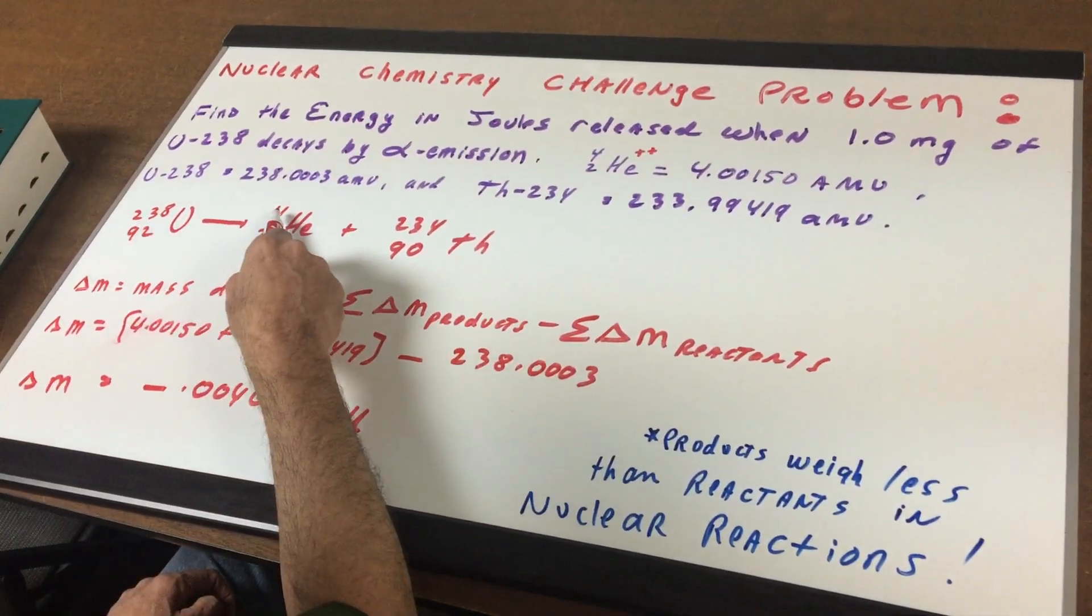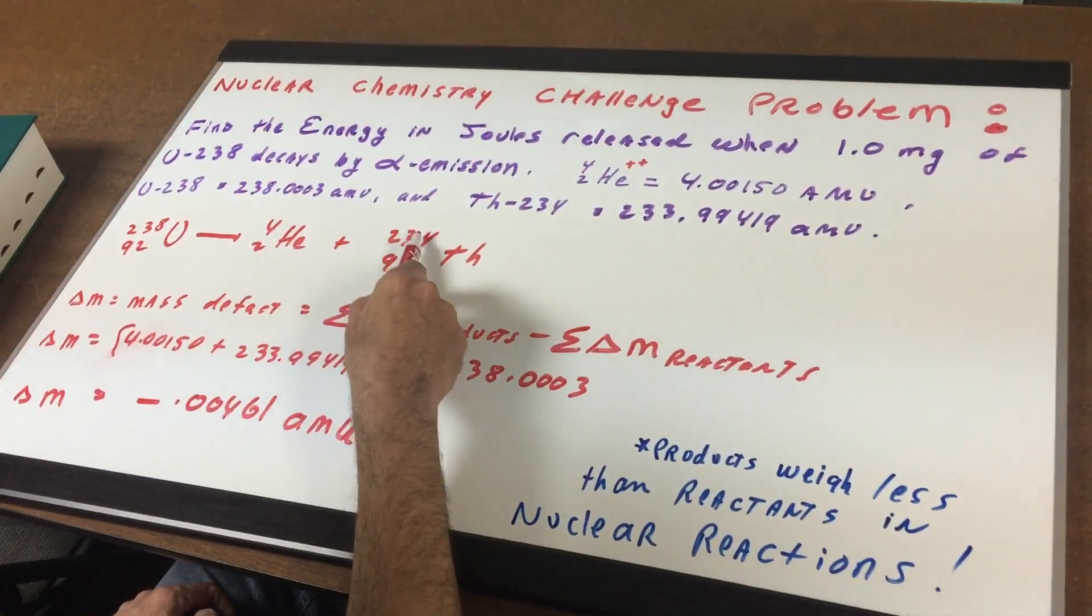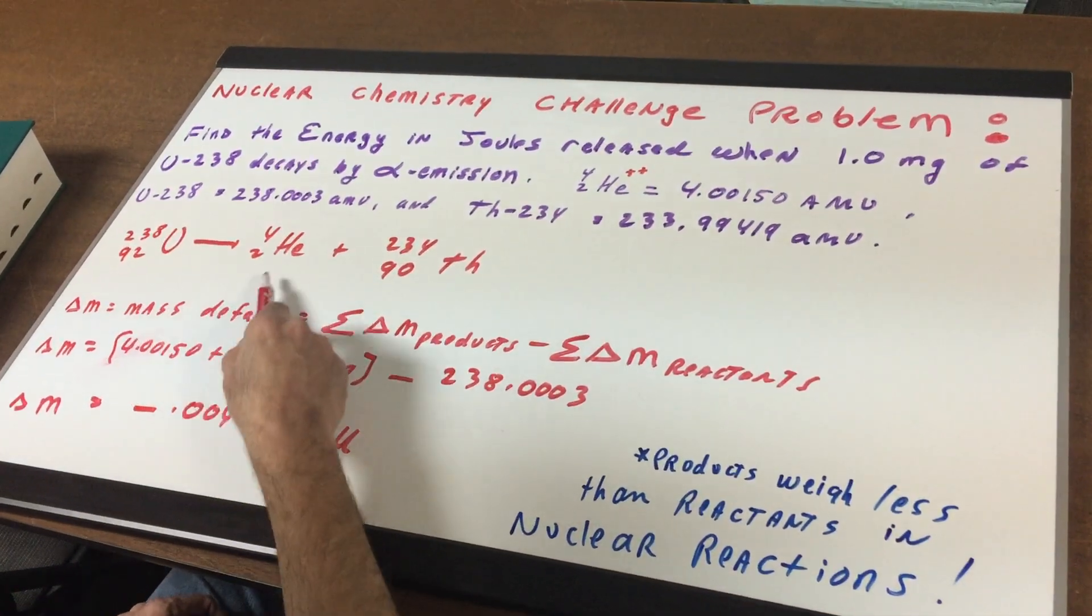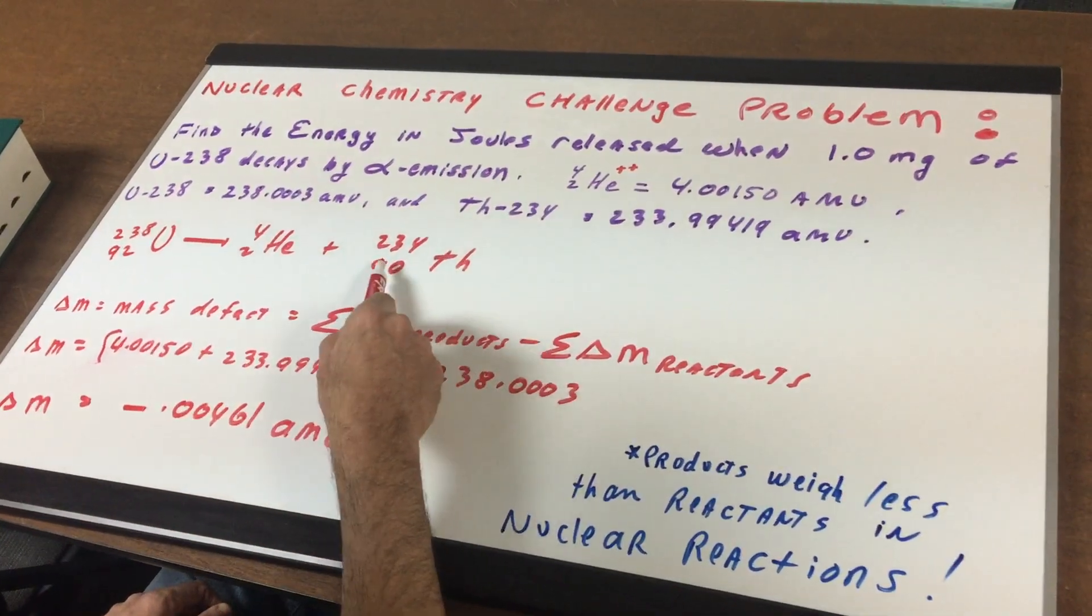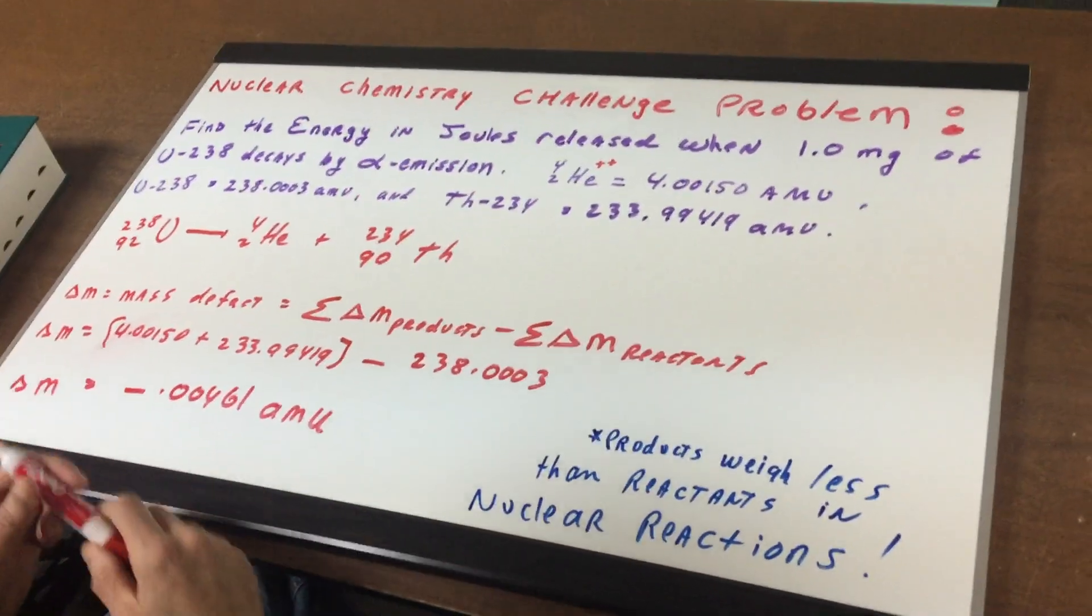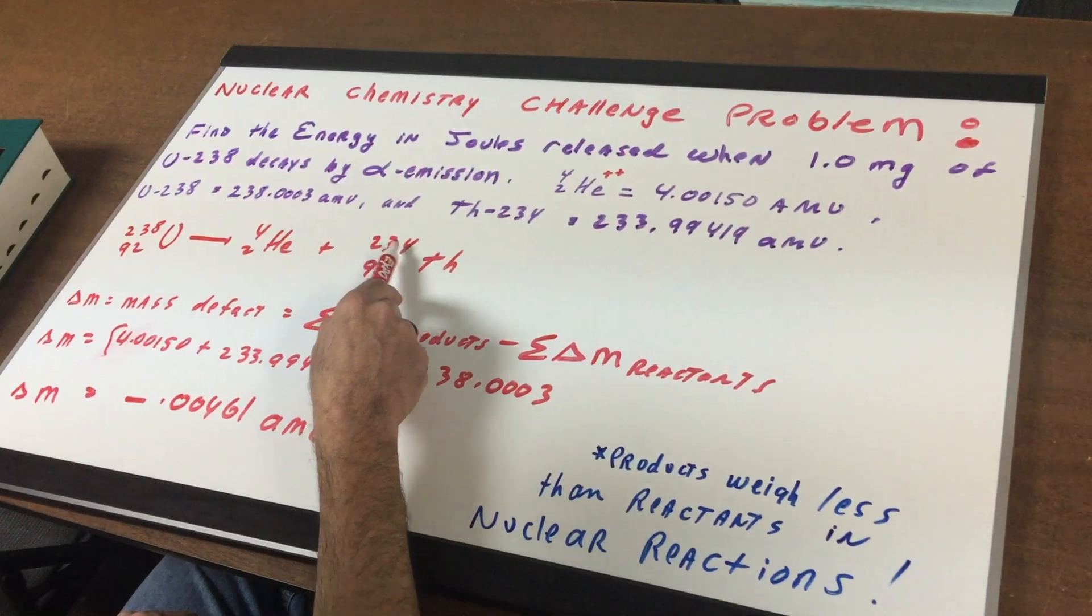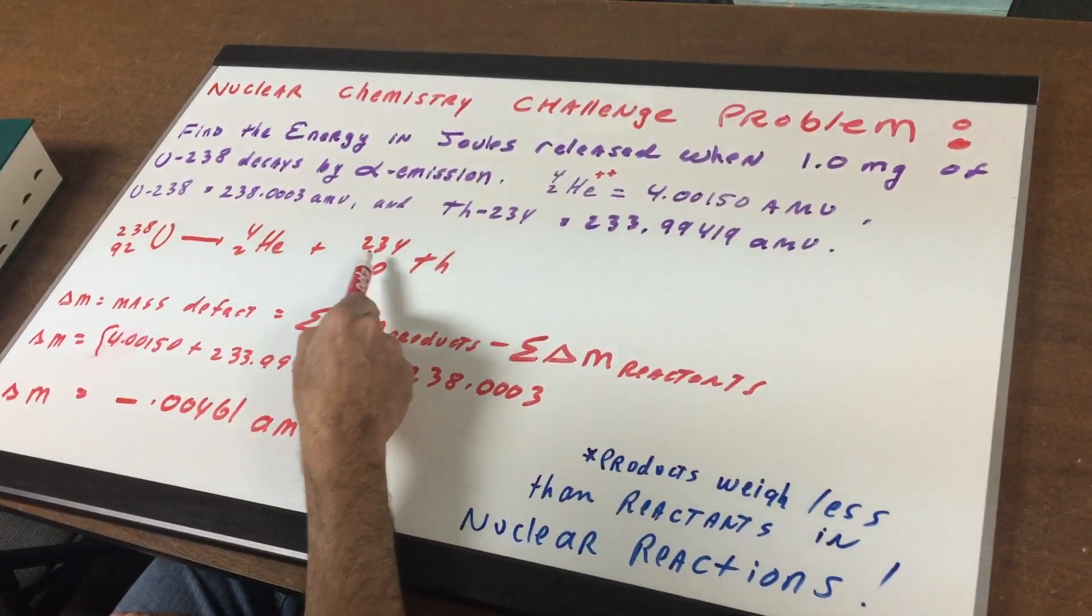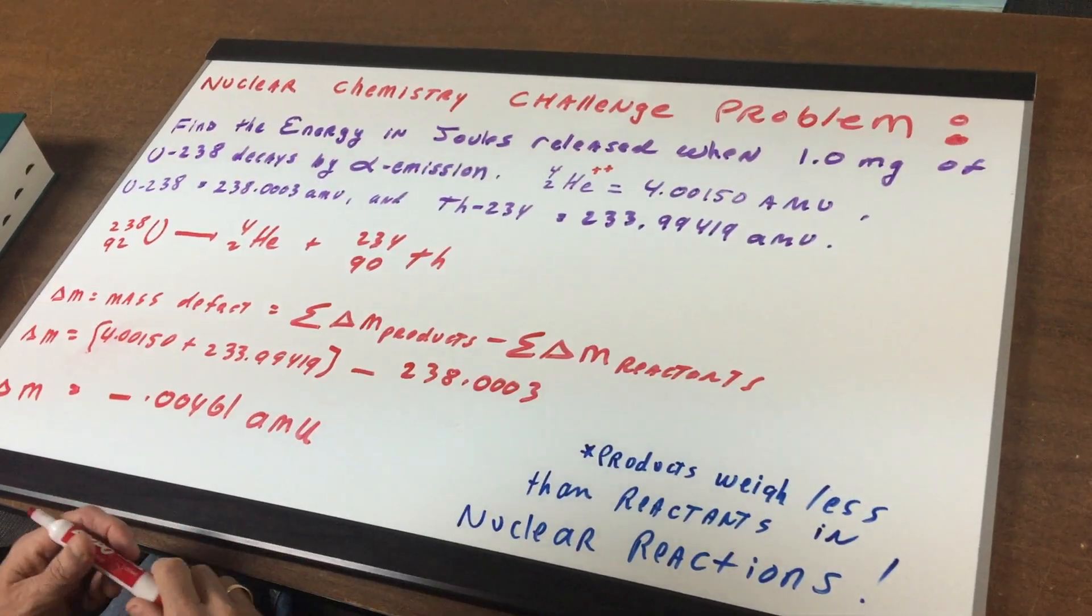So notice the upper left is 238. Here you got a 4. So you need a 234 because 234 and 4 makes 238. If this is a 2, this has to be a 90. And if you looked up the atomic number 90, you see it's the element thorium. Now, any time you have an alpha decay, as you can see the atomic mass has decreased by 4 and the atomic number has decreased by 2. It's a sure bet question on the exam.